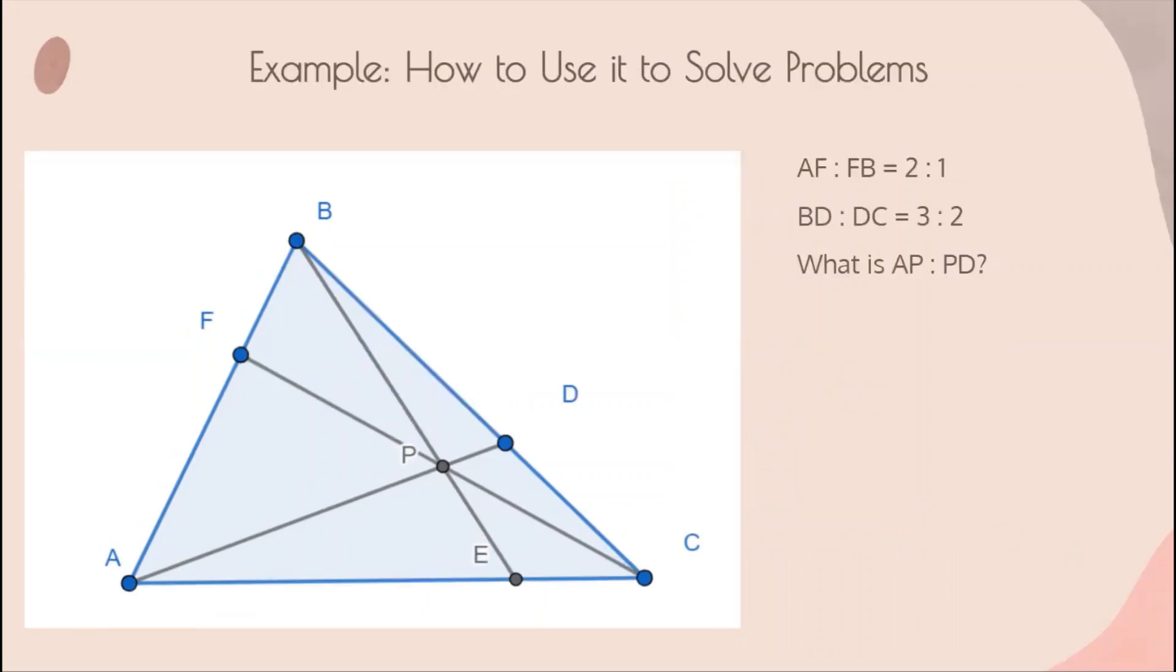Now let's use this knowledge to do an actual problem. We're given the information that AF to FB is 2 to 1, and BD to DC is 3 to 2. We are asked to find the ratio AP to PD. Let's start by assigning some masses. Masses don't need to be integers, but it's easier if they are, so let's try to make them integers. B has to weigh twice as much as A, so let's make B 2 and A 1.